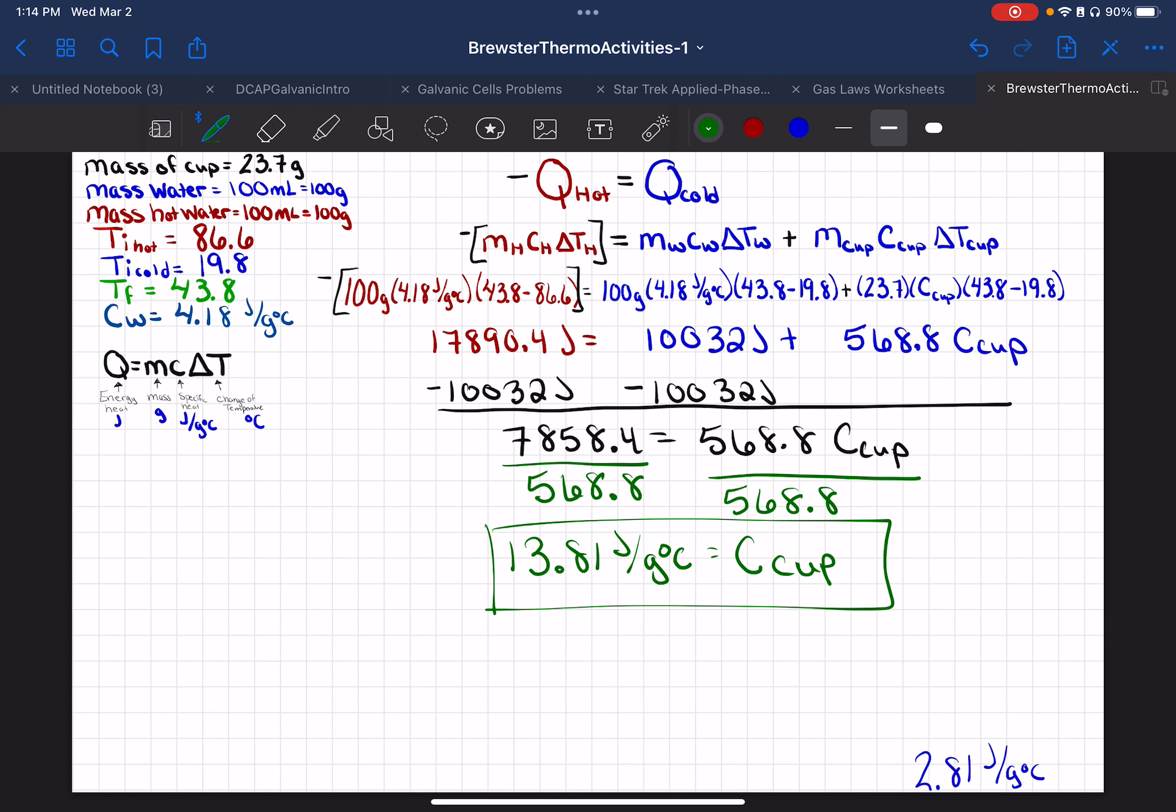But you're going to use your data. You're going to calculate for your cup. And whatever you get for that C for your cup is what you're going to calculate with for the rest of the labs, okay? And that's how you calculate your specific heat for your cup.